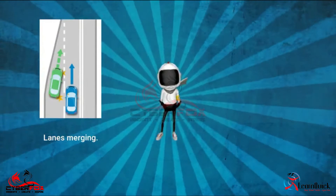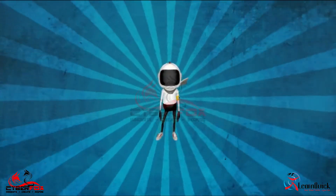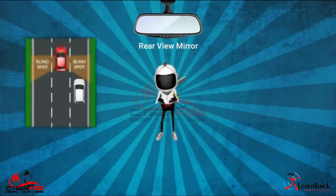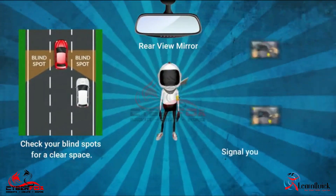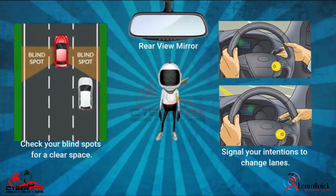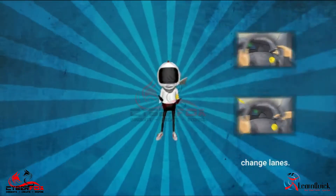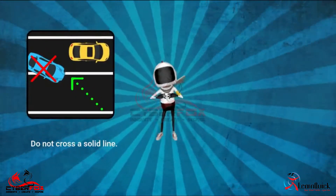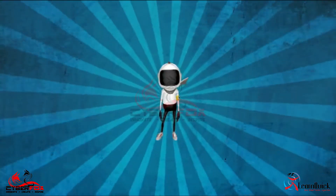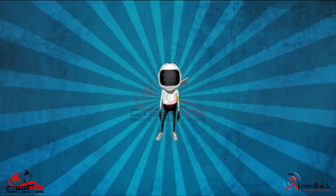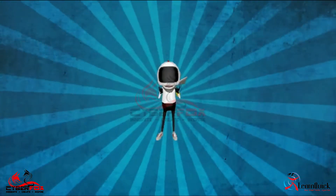When changing lanes, you need to carry out a sequence of checks. First, check your rearview mirror and blind spots for a clear space. If it is safe, signal your intention to change lanes. Watch out for road signs and markings. Do not cross a solid line. Recheck your blind spot and if it is safe, move into the adjacent lane. Cancel the signal and continue with the test.